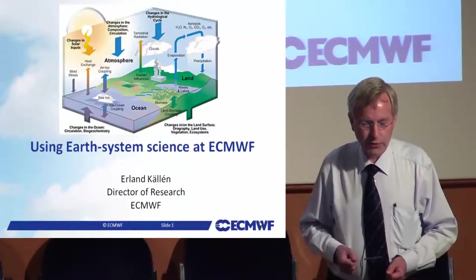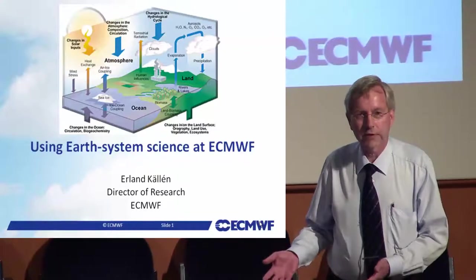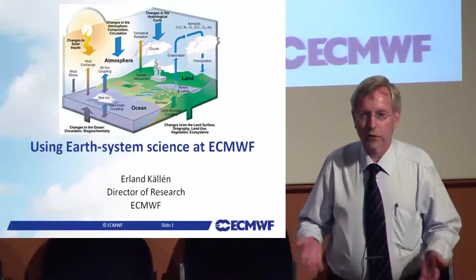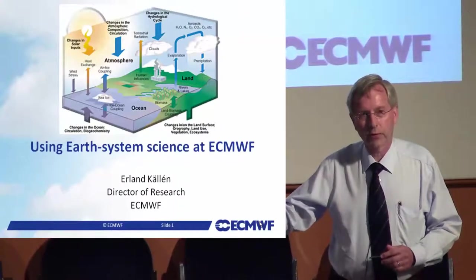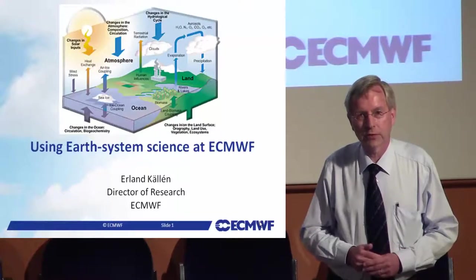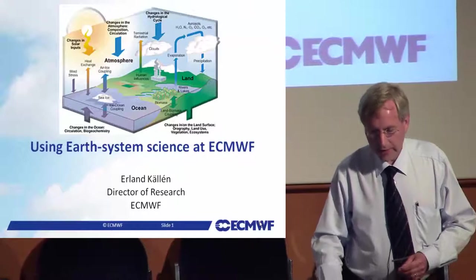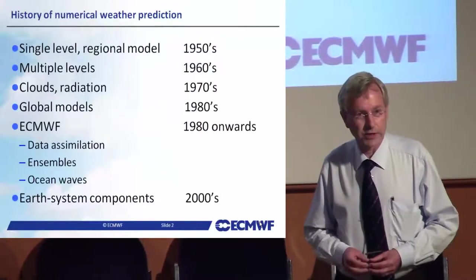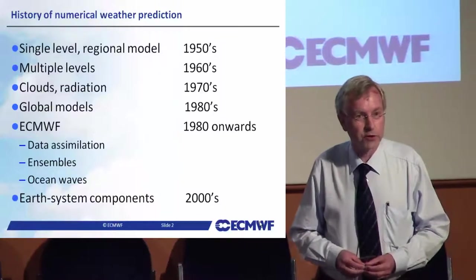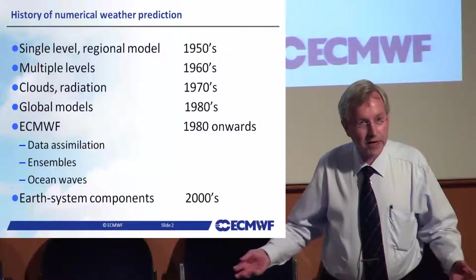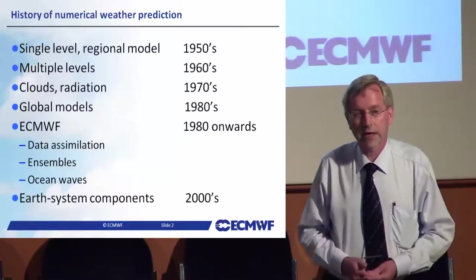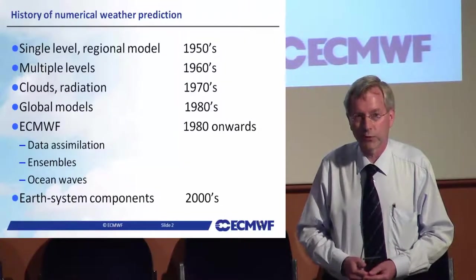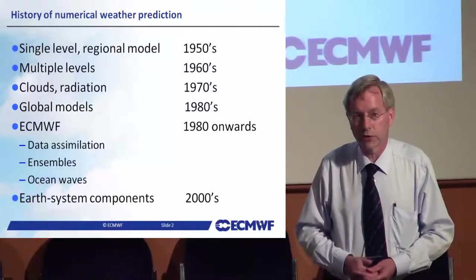In this cartoon on the slide, you see that it's the land surface, the ocean, and the composition of the atmosphere that matters — not just the atmosphere itself. Going back to the very beginning of numerical weather prediction in the mid-1950s, the first successful NWP forecasts came out. At that time, the atmosphere was represented by just a single level and regional model, yet it was possible to make decent forecasts up to about two days ahead.